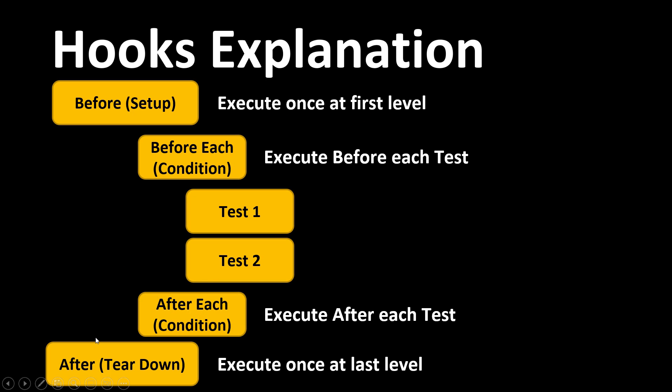Let's look at the execution sequence. First 'before' executes once at the top level. Then 'before each' runs before both tests. The execution order is: before, then before each, then test one, then after each, then before each again, then test two, then after each. 'Before each' and 'after each' are linked to your individual test cases.